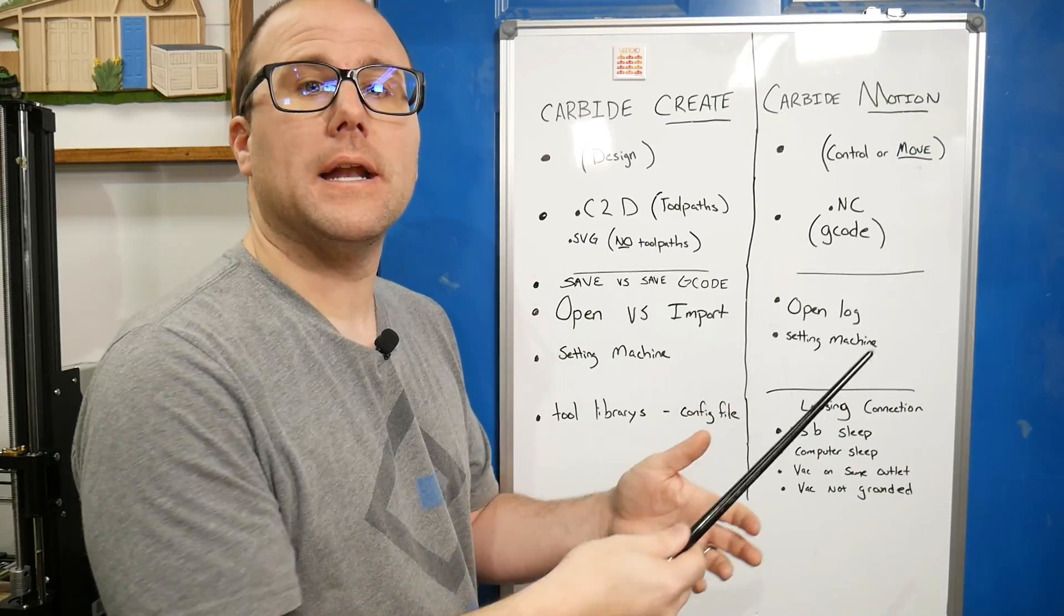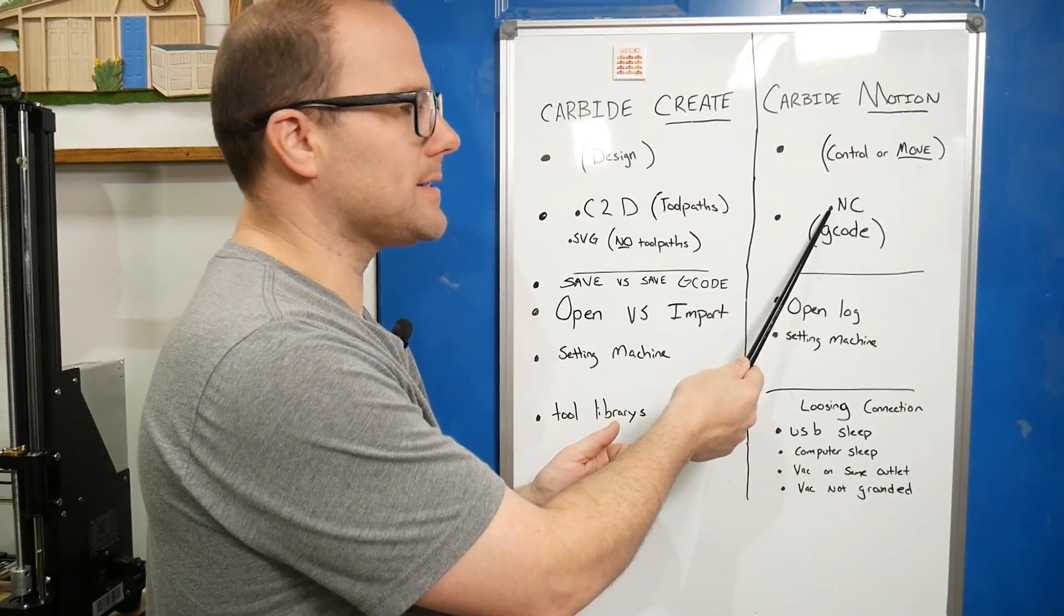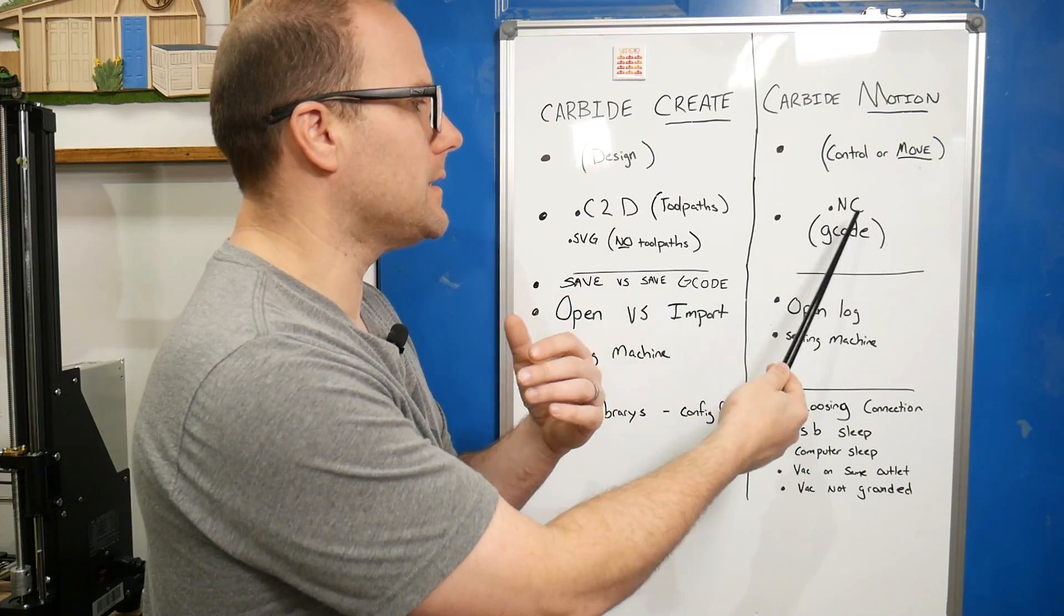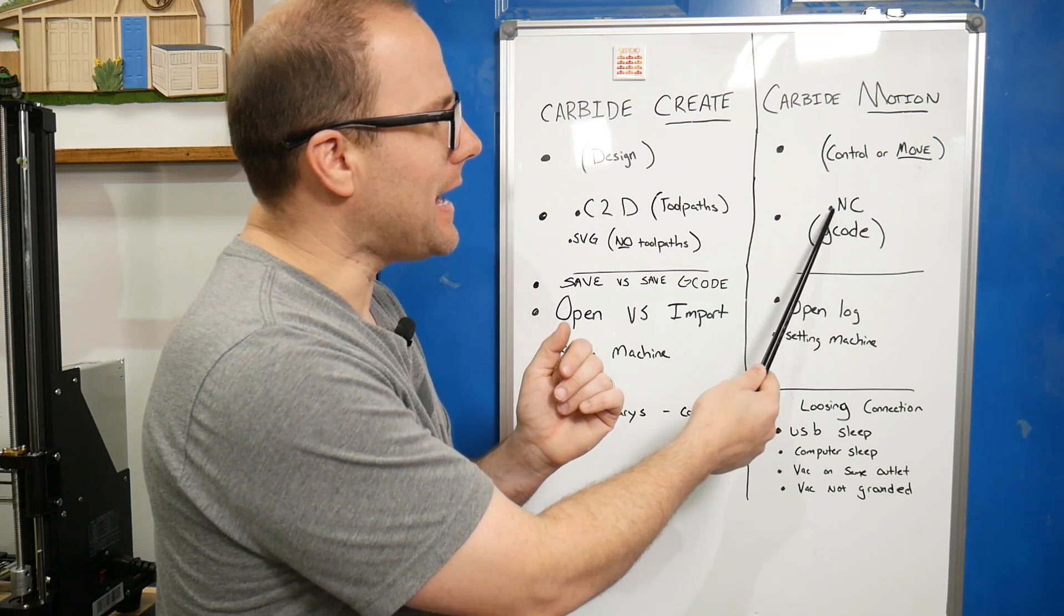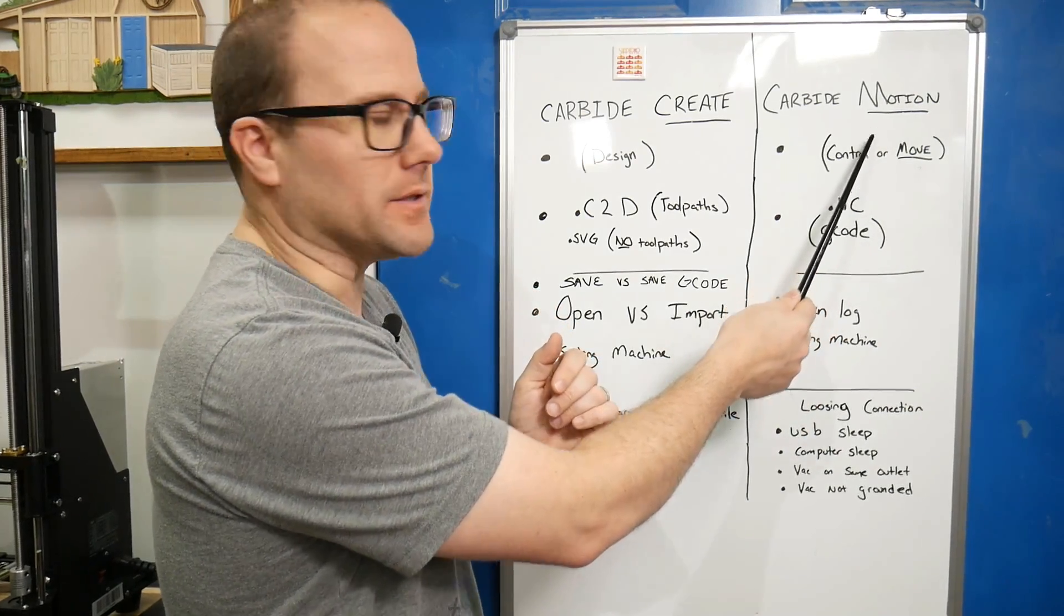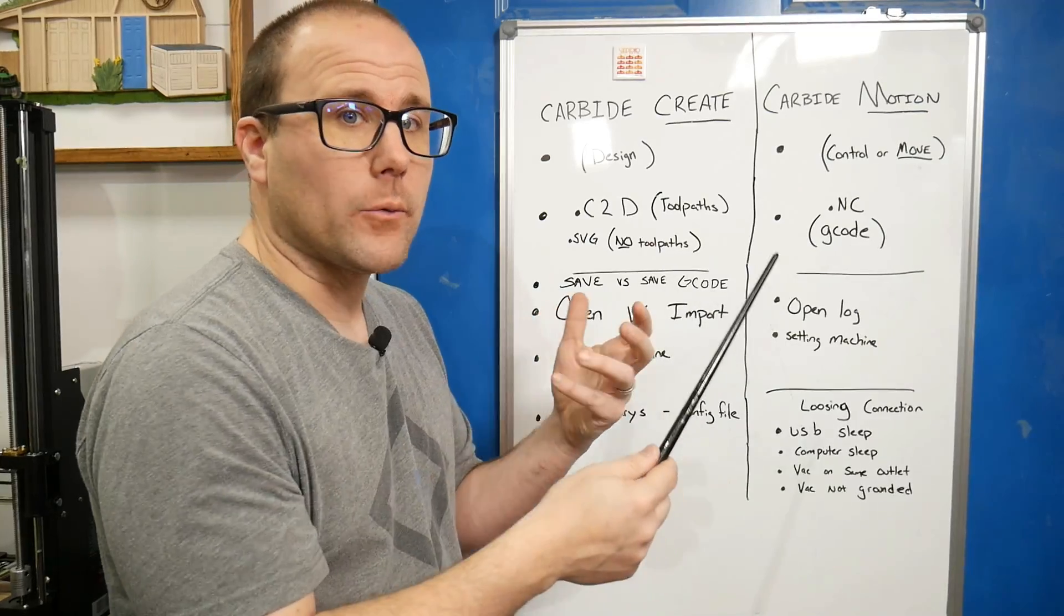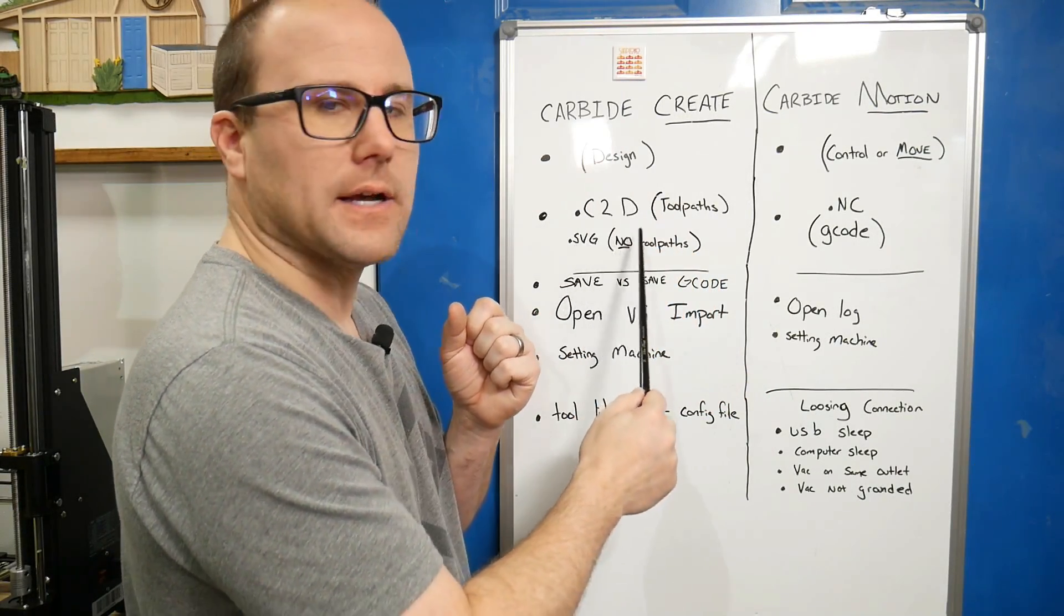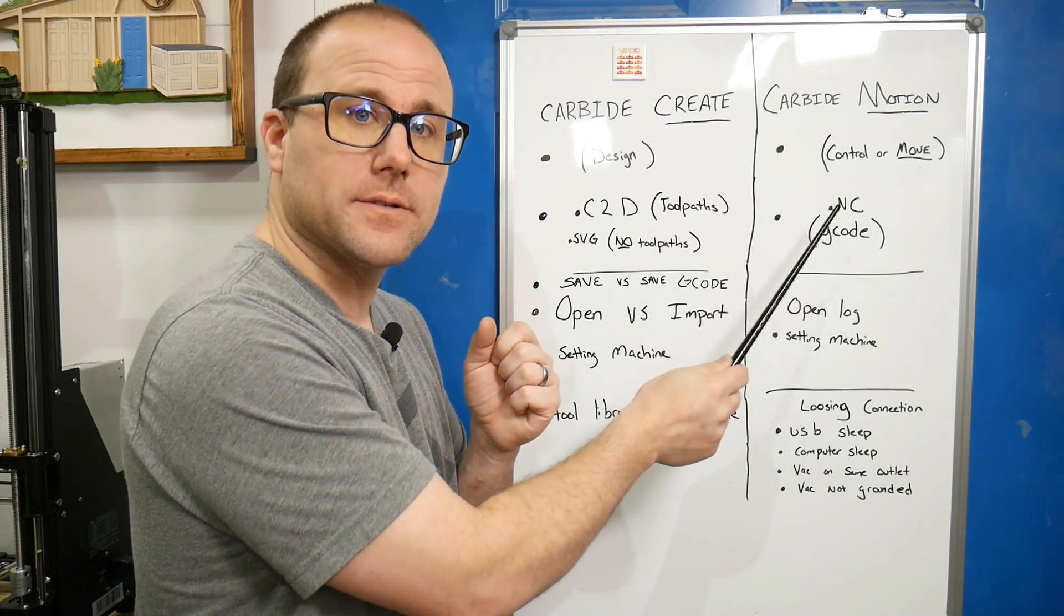What does Carbide Motion open? The extension is .nc, and nc is a g-code file. It will only open in Carbide Motion. If we try to load the .nc into Carbide Create, we would get nothing. All my files are Carbide Create design files. They are not a g-code file, so you have to create that yourself.